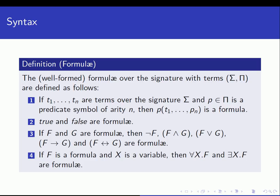If f and g are formulas, we can construct other formulas using logical symbols: not f, f and g (conjunction), f or g (disjunction), f implies g, and logical equivalence. And if f is a formula and x is a variable, we can use quantifiers: 'for all x, f' and 'there exists an x such that f is true'. Note that x likely occurs in f when quantifiers are used.